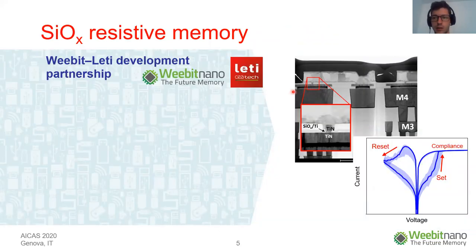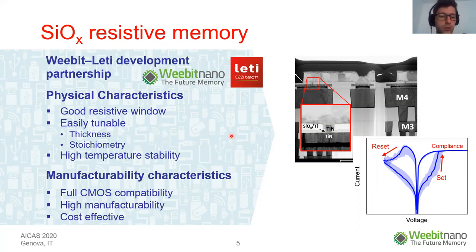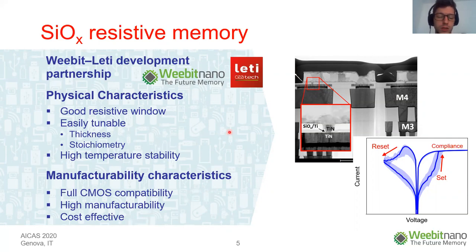Our work consists of an implementation of a proof-of-concept spiking network for recognition of handwritten digits, implemented using our silicon oxide-based resistive memory. Wibit is developing this resistive memory technology in partnership with CEA Leti, because silicon oxide was found to have good physical characteristics such as a good resistive window, easily tunable thickness and stoichiometry, and excellent high-temperature stability, along with obvious manufacturability characteristics such as being a fully CMOS-compatible material and representing a very cost-effective solution for implementation of RERAM.